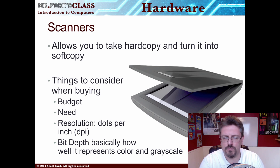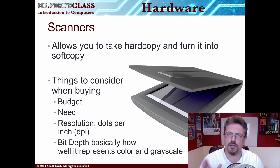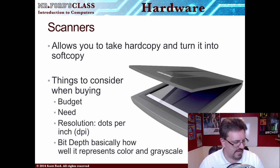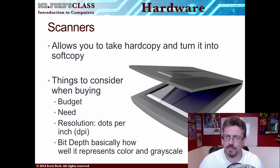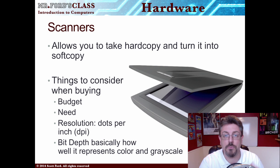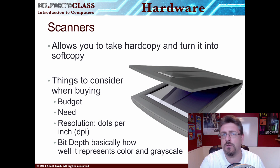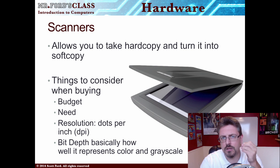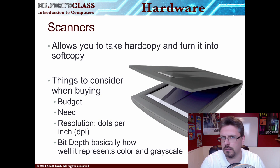The next input device is a scanner. The scanner is basically a photocopier for your computer — it takes hardcopy (paper, documents, something tangible you can touch) and turns it into softcopy, which is the digital version. For example, a physical book is hardcopy; buying that same book on Kindle or Nook is softcopy — you're reading the text through a screen rather than holding a physical book.